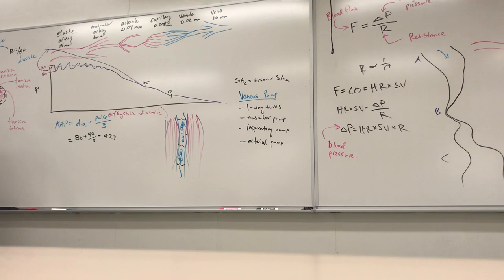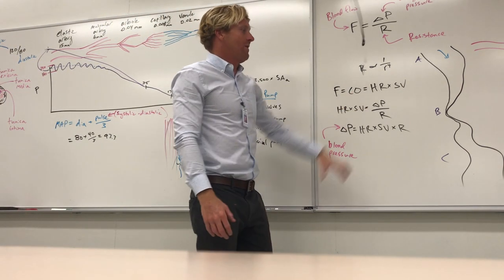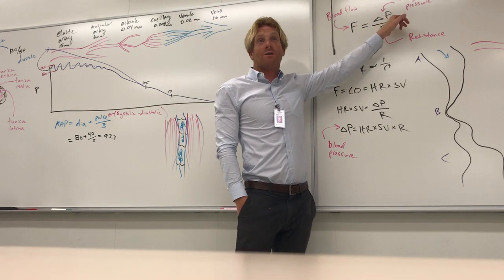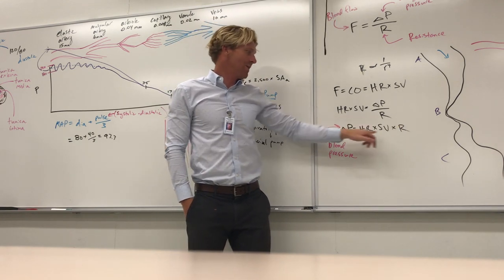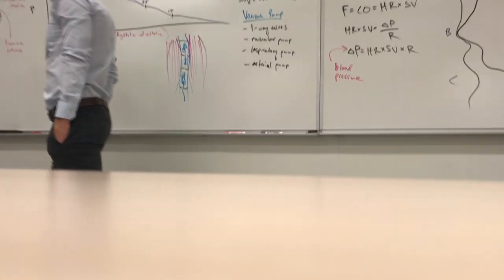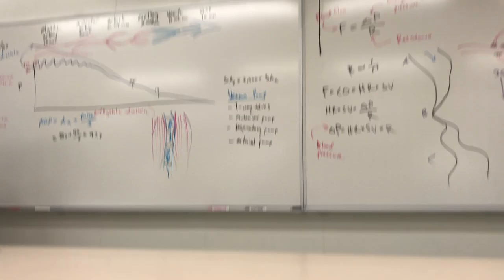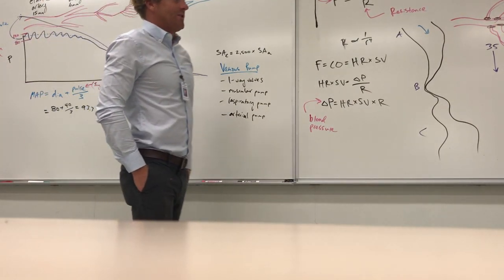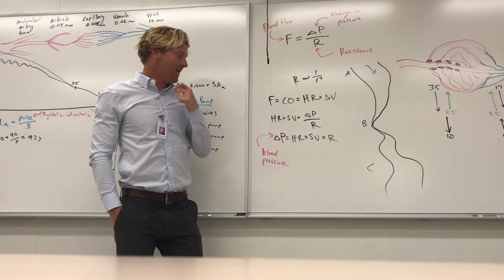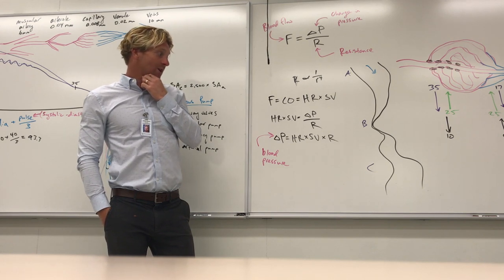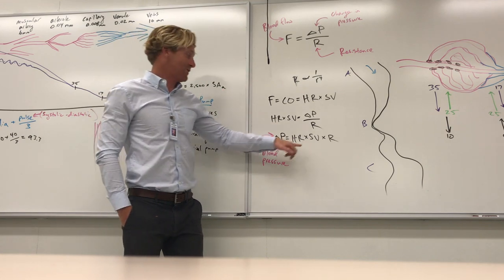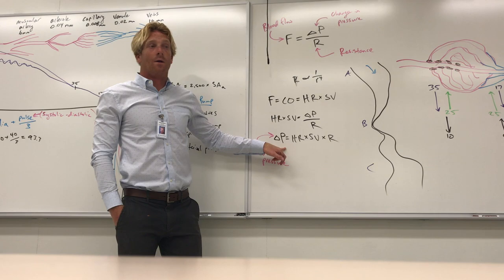For the equations: you can either memorize the equations or just remember the take-home messages — resistance goes up, blood flow goes down; pressure goes up, blood flow goes up. A key question type: which situation would cause blood pressure to increase? The answer is stroke volume increases — because ΔP = HR × SV × R, and if any of those go up, blood pressure goes up. You can work through each scenario using that equation.